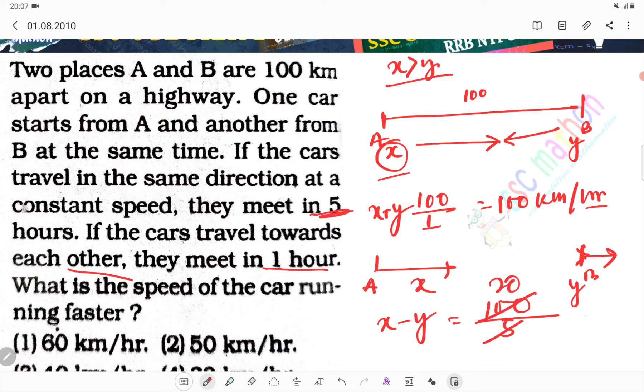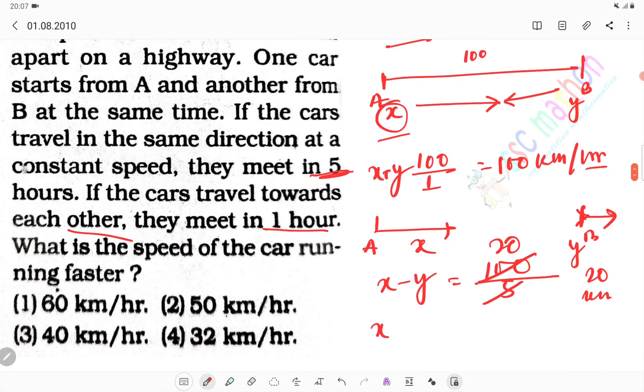X minus Y is 100 divided by 5 hours, so 20 km per hour. X plus Y is 100, so X plus Y is 100 and X minus Y is 20.